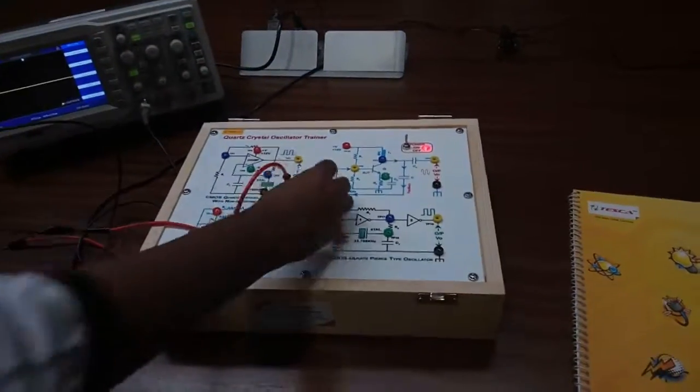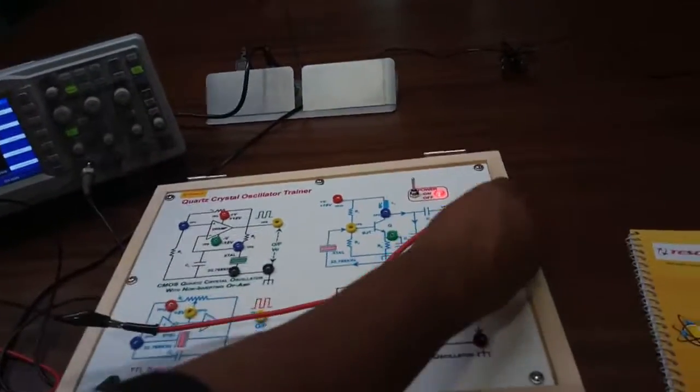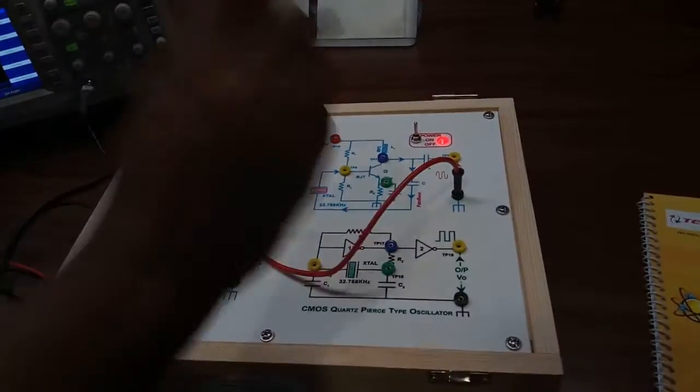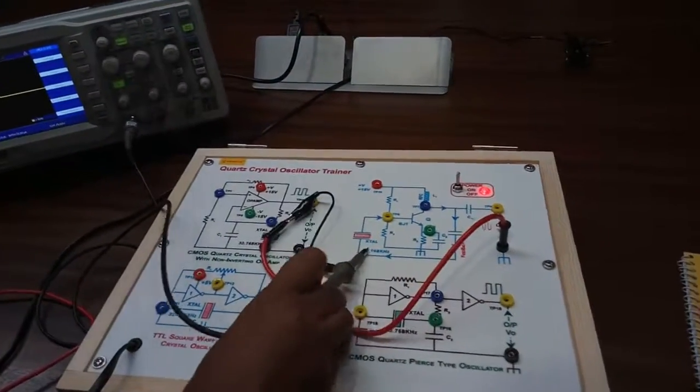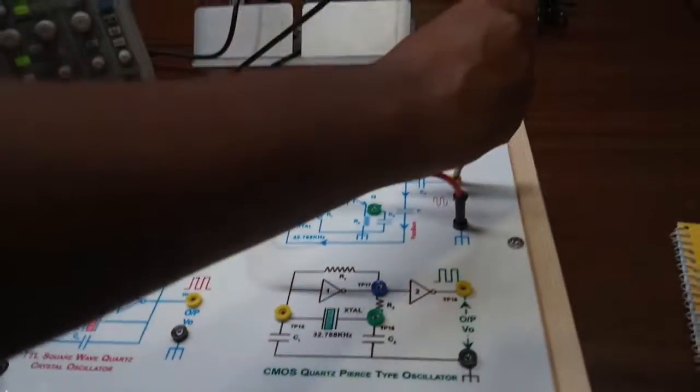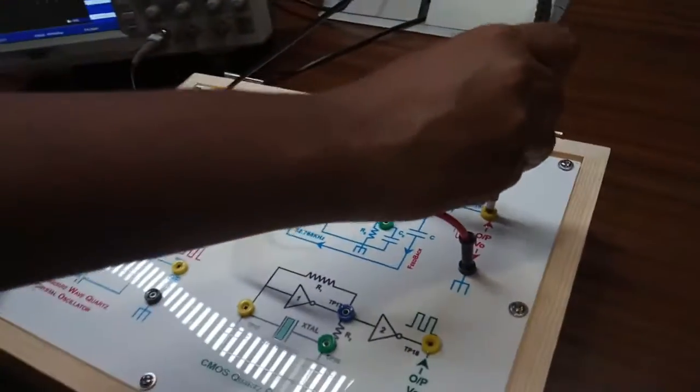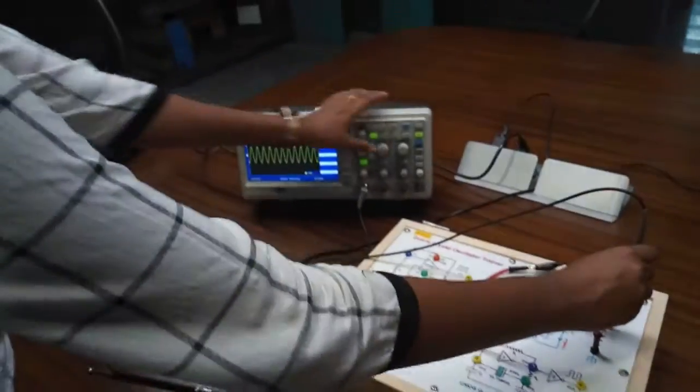Now we will observe the output waveform of transistor-based crystal oscillator. Here we will get a sine wave. This is the sine wave.